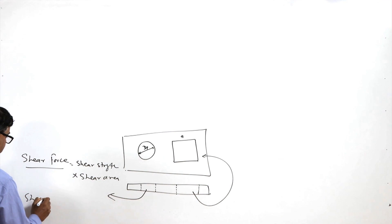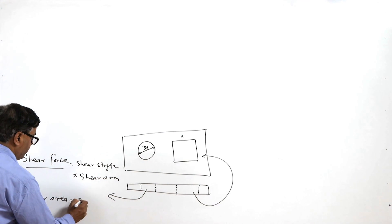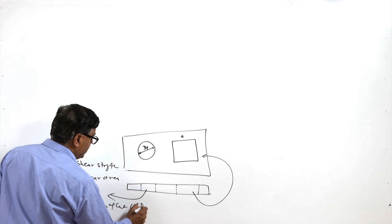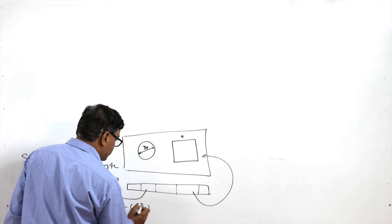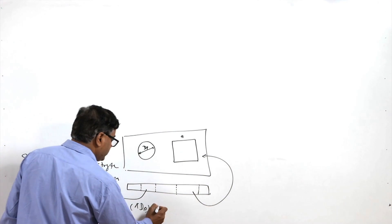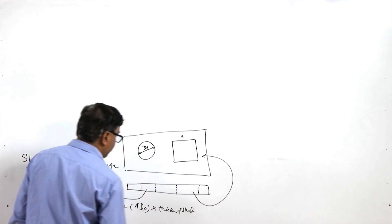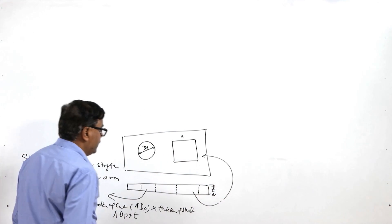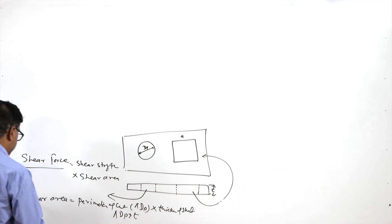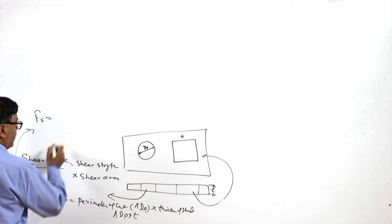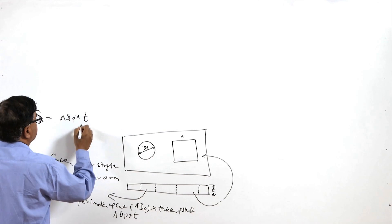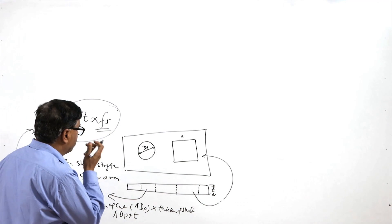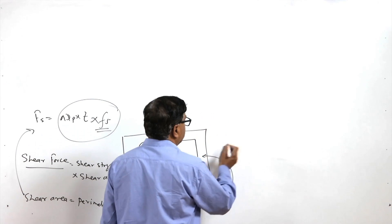The shear area is obtained from the perimeter of the cut. In this case it is π·D_P, the diameter of the punch, multiplied by T, the thickness of the sheet. So the shear area is π·D_P × T. The shear force F_s equals the perimeter of the cut (π·D_P) multiplied by the sheet thickness T, multiplied by F_s, the shear strength of the material. Using these, we can calculate the shear force while neglecting frictional effects.